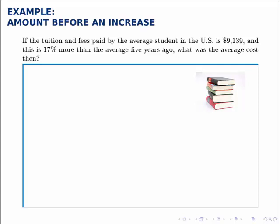First of all, we recognize that the original cost is the unknown. So let's say we start with the original cost, and then we add to that 17% of itself. If I want to multiply 17% times x, I write it as 0.17, the decimal form, times x, equals the amount it is today.